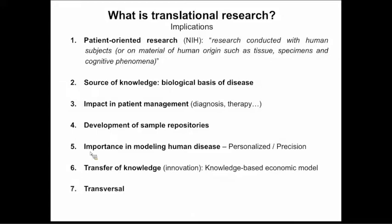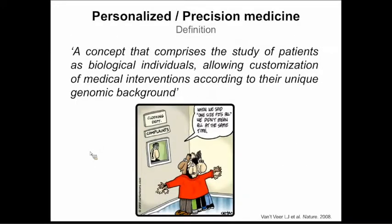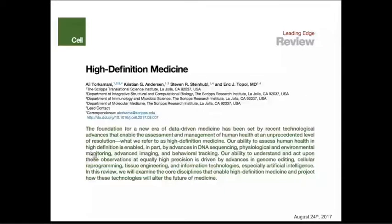There's also the importance of modeling human disease in the overlapping concept of personalized and precision medicine, which deals with tailoring interventions based on the individual characteristics of the disease. There's also knowledge transfer, development of intellectual property and new devices. A definition I like is that precision medicine comprises the study of patients as biological individuals, allowing customization of medical interventions according to their unique genetic and genomic background — encapsulating the notion that one size fits all is no longer working. Eric Topol recently introduced high-definition medicine, adding the relevance of big data in how we can model disease in humans.